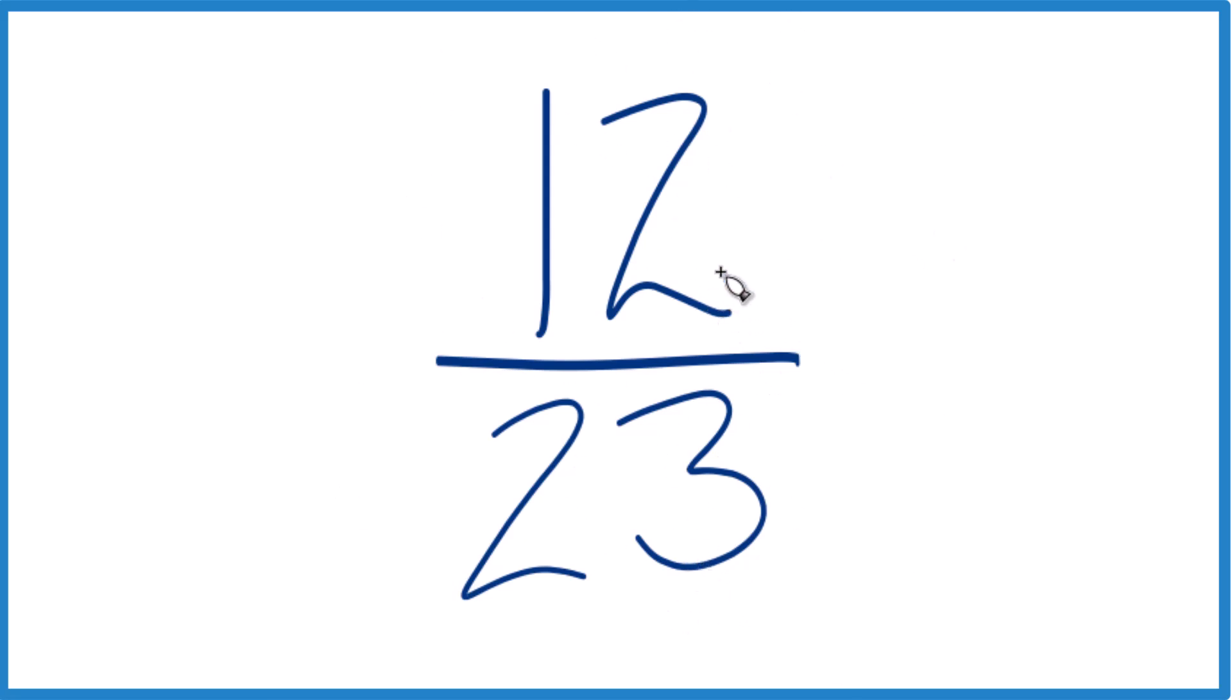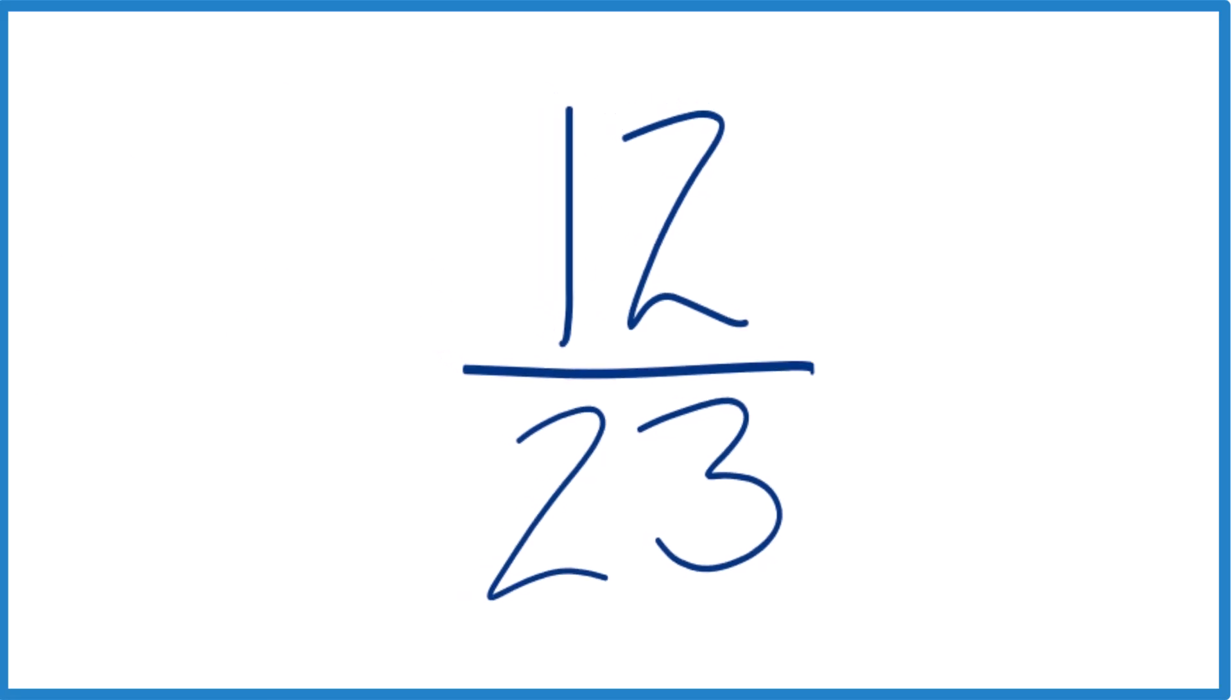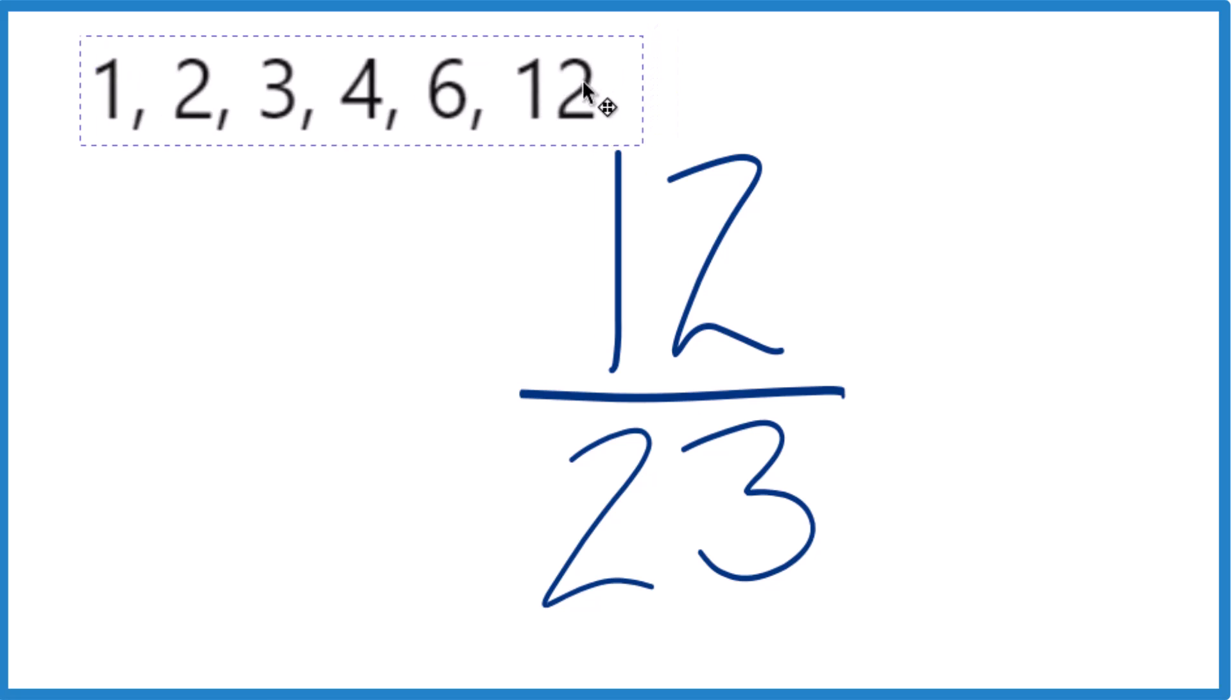We want the greatest common factor. So let's write the factors for 12 first. The factors for 12 are: 1 times 12, 2 times 6, 3 times 4.